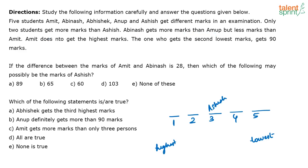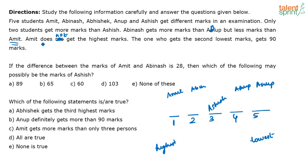Abhinash gets more marks than Anoop but less marks than Amit, and Amit does not get the highest marks. One possibility was Abhinash in position two, with Amit in position one and Anoop in four or five. But since Amit does not get the highest marks, Abhinash cannot be in position two.